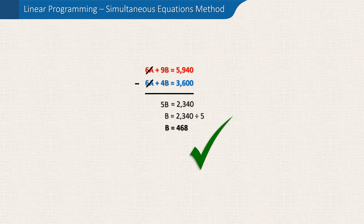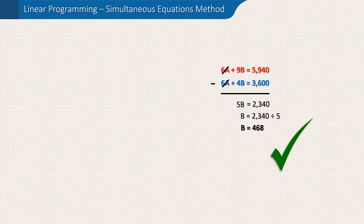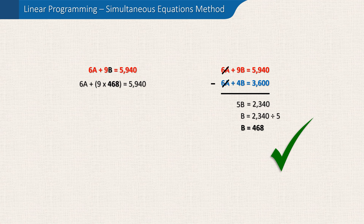Now we have this value for B, we can use it in either of our original equations to work out A — the number of alphas to produce. Let's use the equation 6A plus 9B equals 5940. This can be rewritten substituting the letter B with the value 468, giving us: 6A plus 9 times 468 equals 5940. 9 times 468 is 4212, so 6A plus 4212 equals 5940.